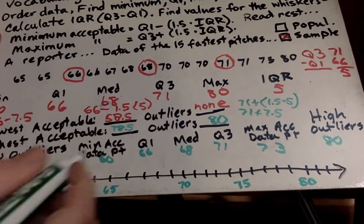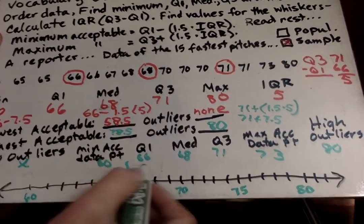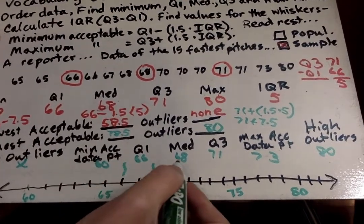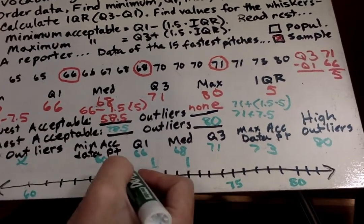Median is inside the box somewhere at 68. Quartile 3 is at 71. And so that should be my box.